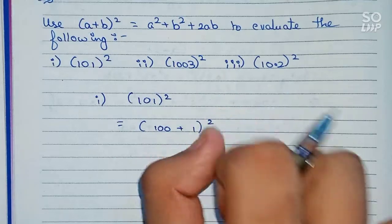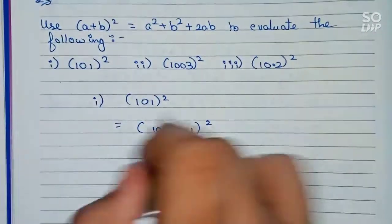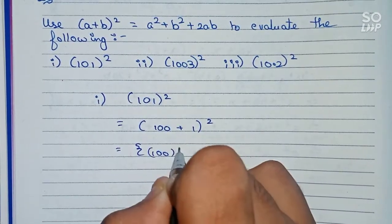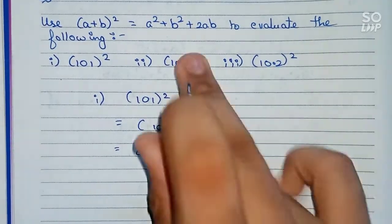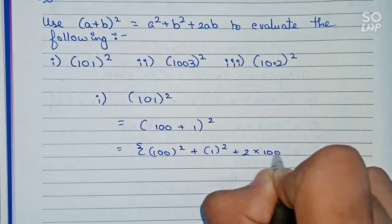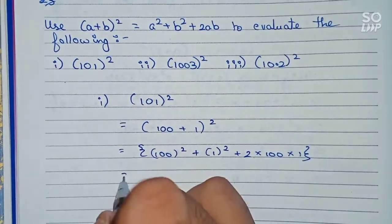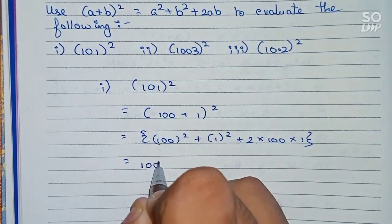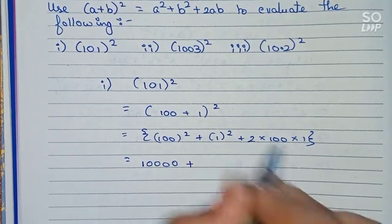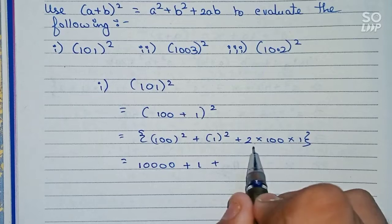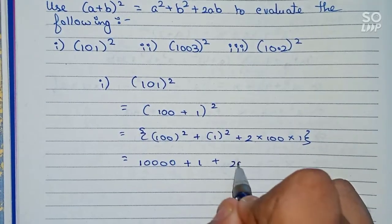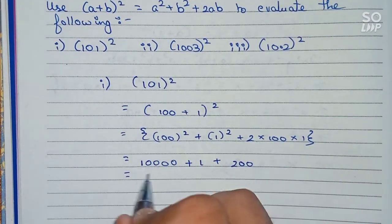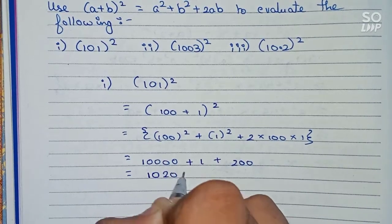So here, 100 will be 'a' and 1 will be 'b'. Using this identity, we put the values: a² = 100², plus b² = 1², plus 2ab = 2 × 100 × 1. Now, 100² means the number of zeros get doubled, so that gives us 10,000. Plus 1² = 1. Plus 2 × 100 × 1 = 200.